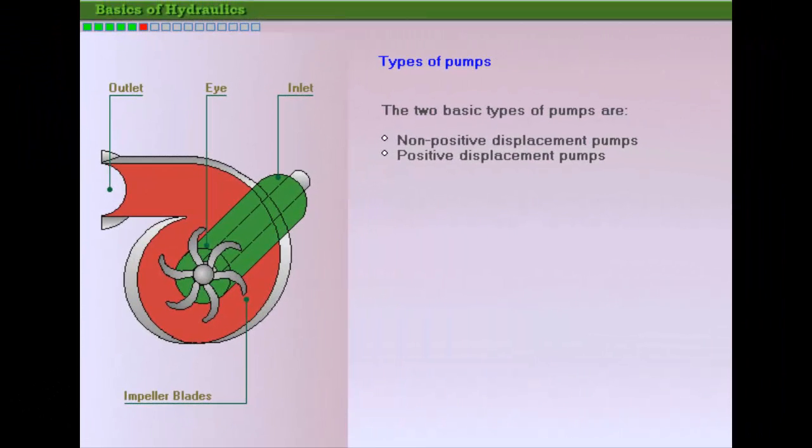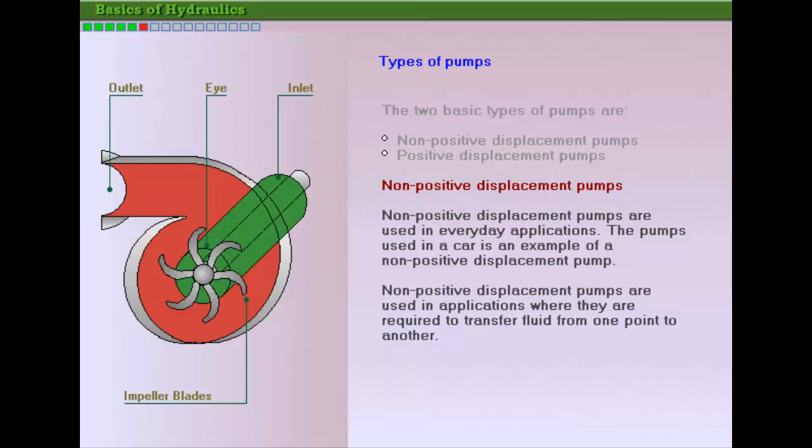The two basic types of pumps are non-positive and positive displacement pumps. Non-positive displacement pumps are commonly used in such applications as automobile water pumps and washing machines.